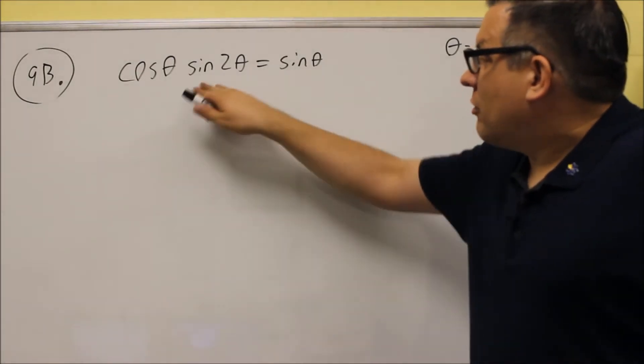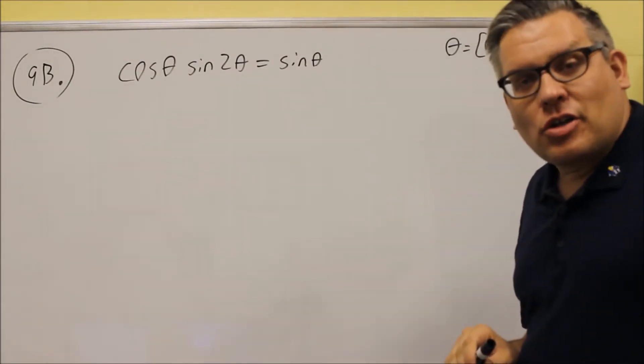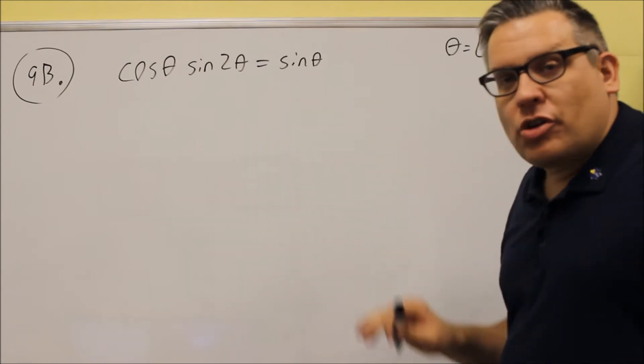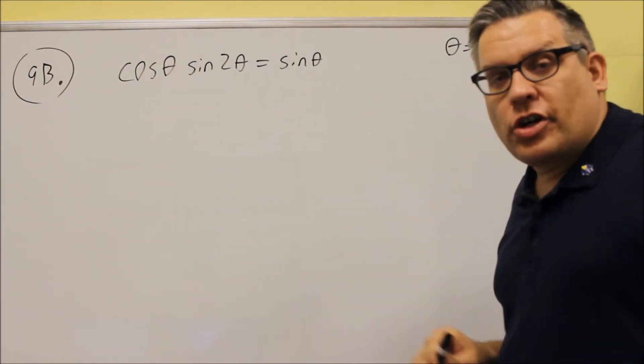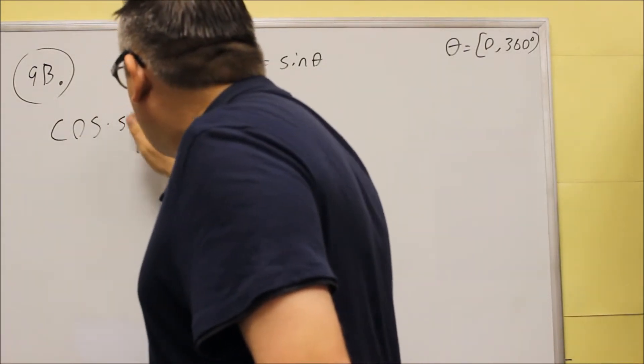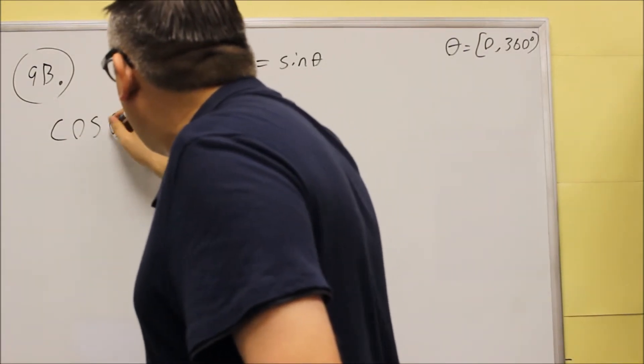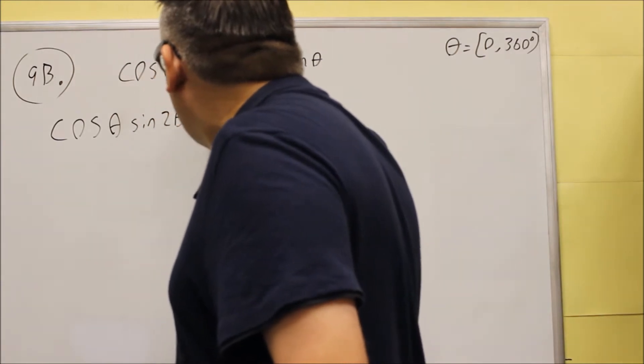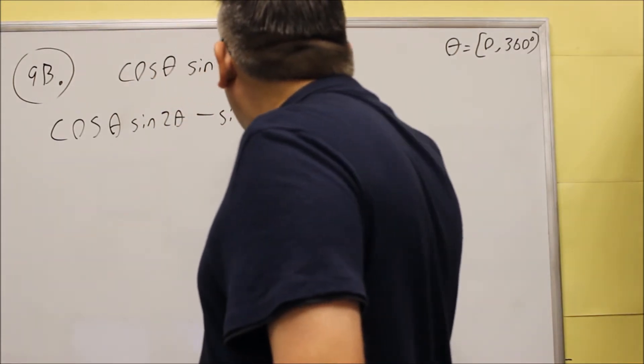For 9b, we have something that is not set equal to 0. So the first thing you want to do is move the sine over and get it equal to 0. So if we do that, we'll get cosine times cosine of theta—don't want to forget your theta there—sine 2 theta minus sine theta equals 0.